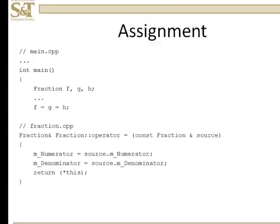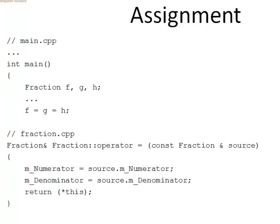So let's start out by taking a look at the assignment operator. Suppose that I am going to declare three fractions as such, and I want to make an assignment like this: f is equal to g is equal to h. Well, the way the compiler interprets that is that h is going to be assigned to g, and then that is going to be assigned to f. So here's our definition of the assignment operator. Notice I'm going to return a reference to fraction — it's scoped as a fraction operator, its name is operator equal, and it takes a const reference to a fraction object, which I will call source.